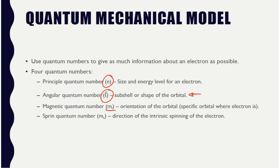The spin quantum number is m sub s, and it describes the direction of the electron's spinning — think of it as left or right. If you were sharing a room with somebody, do you get the left side or the right side? That is really all it comes down to: m sub s is just plus or minus one-half.